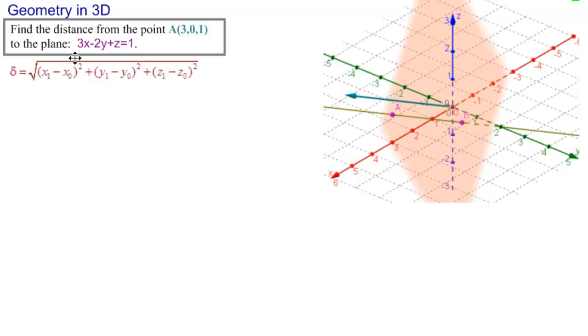Well, the coefficients of x, y, and z here are actually the components of the normal vector. So, the vector normal to the plane has components 3, minus 2, 1. And now, that gives us a directional vector for the line passing through A that's normal, so we'll write that, and we'll call this line P.